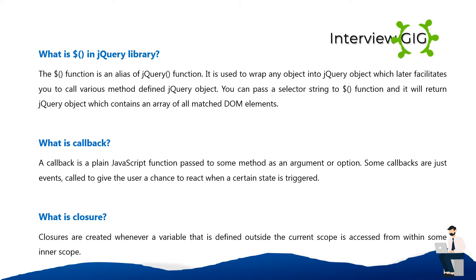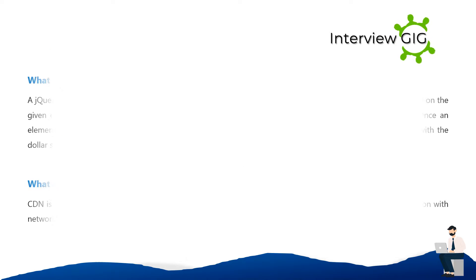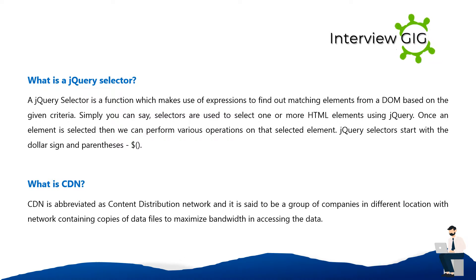What is a closure? Closures are created whenever a variable that is defined outside the current scope is accessed from within some inner scope. What is a jQuery selector? A jQuery selector is a function that uses expressions to find matching elements from a DOM based on given criteria.